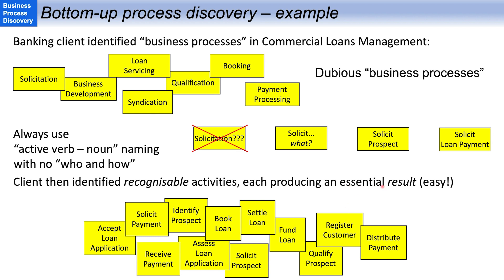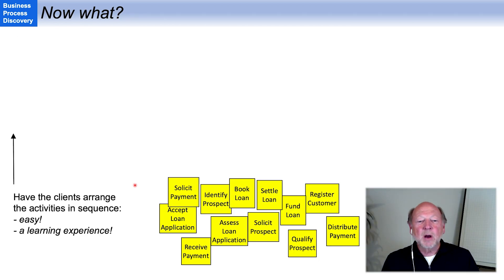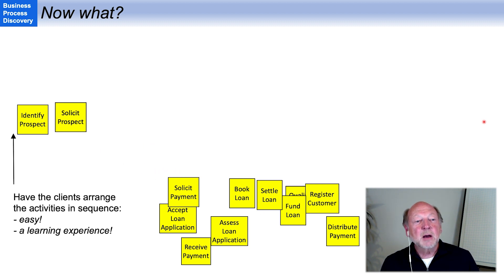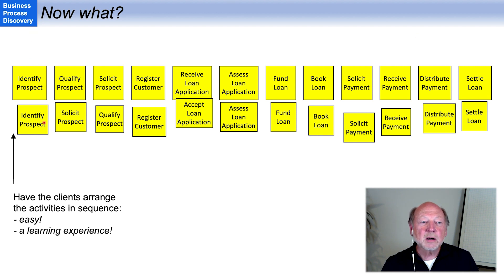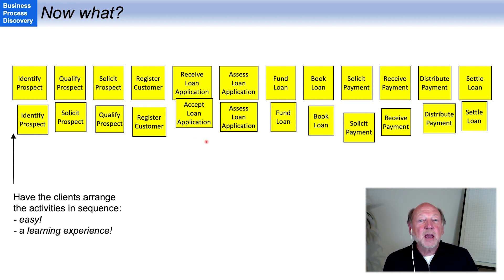Each of these produces an essential result. For instance, 'register customer' leads to the result 'a customer is registered,' and each of these is recognizable — everybody in the room could look at this and say, I recognize my day-to-day work in there. We carried on in that vein by putting those activities into sequence, and simply getting people together and manipulating the media was a learning experience. They saw where they had confused the sequence, where they needed to rename an activity, and most importantly, everybody was learning what their colleagues in other departments were actually doing.